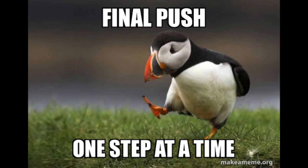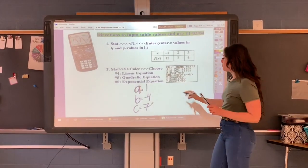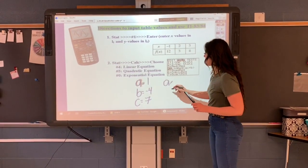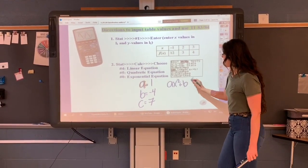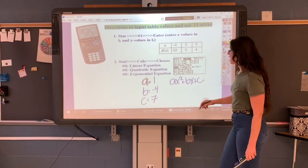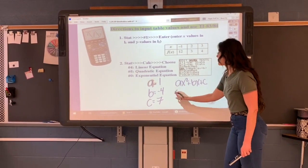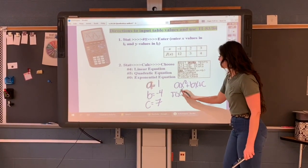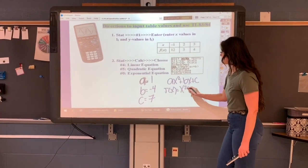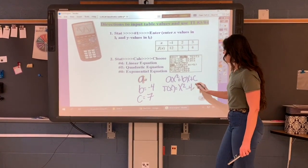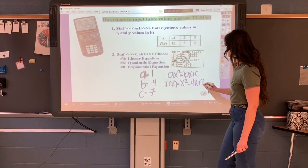Final step. Make sure you put that into standard form. So a standard form of quadratic is AX squared plus BX plus C. So my final answer should be Y equals or F of X equals one X squared or just X squared minus four X plus seven.